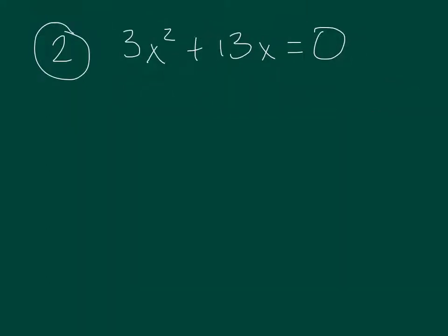So again, number 2, we don't have a c term, right? Remember, ax to the second plus bx plus c. We're missing just the number. So we look at these and say, what do they have in common? Well, they both have an x. We're going to take an x out.